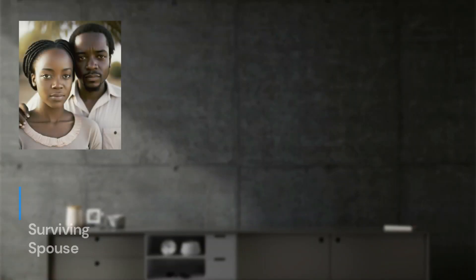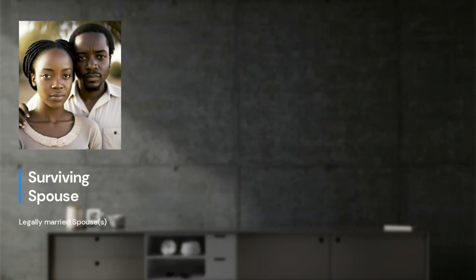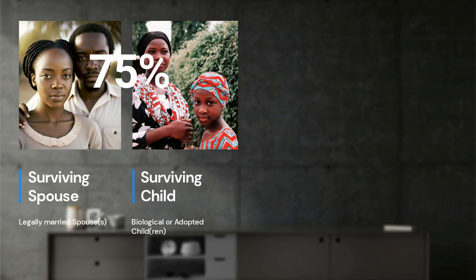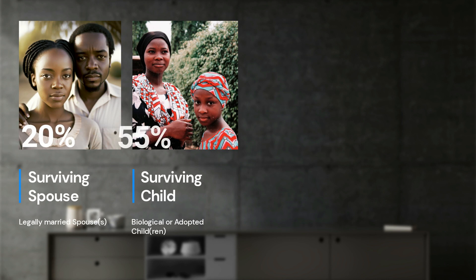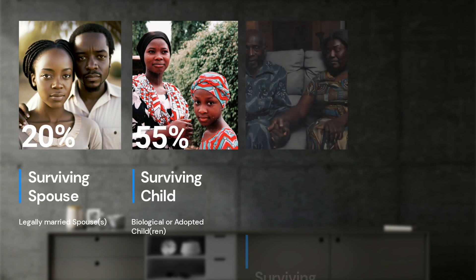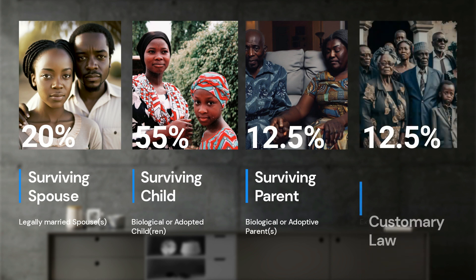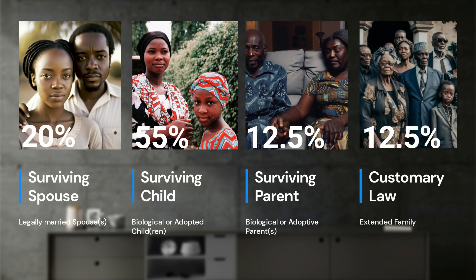The surviving spouse and the surviving child are jointly entitled to 75% of the estate. The spouse's portion is approximately 20% of the estate and the children get the remaining 55%. The surviving parents will share 12.5% and the remaining 12.5% is distributed in accordance with the customary law and tradition of the deceased.